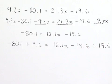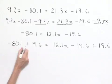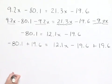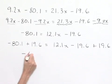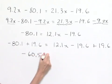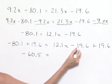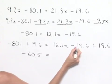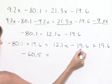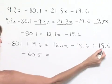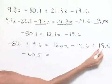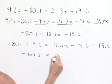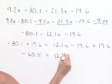On the left hand side of the equation, we combine these two numerical values to give us negative 60.5. On the right hand side, the negative 19.6 and positive 19.6 combine to give us zero, which leaves us with our 12.1x.